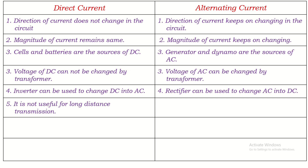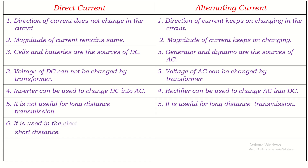Direct current is not useful for long distance transmission — it cannot be transmitted over very long distances because during transmission a lot of electrical energy is wasted. On the other side, alternating current is useful for long distance transmission, from power plants to different cities as well.